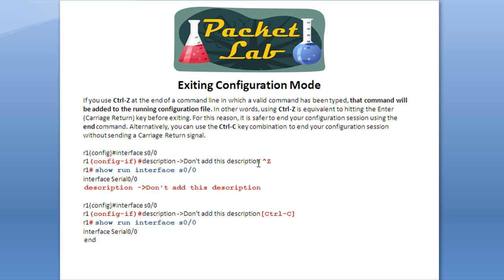What I want to do is get out of configuration mode without applying this description, so I hit Control Z and go back to privileged exec mode. Everything looks fine from here. I issue 'show running-config interface serial 0/0' to show the current running configuration for that interface — and when I see the output, I don't want to see that description, but I do. What happened is Control Z acted as Enter and then end, so it took the configuration I didn't want and then exited me out of configuration mode. With a description it's no big deal, but with an IP address or a shutdown command, this can cause a serious problem.